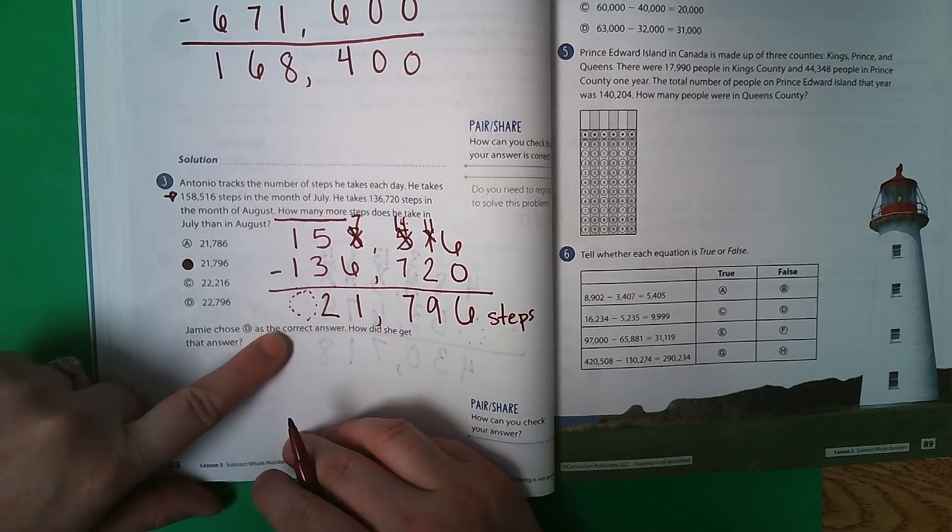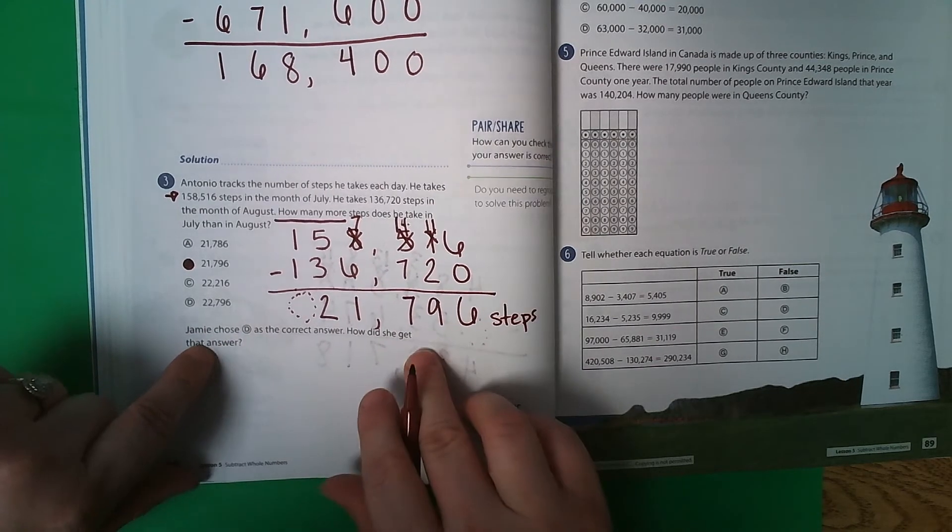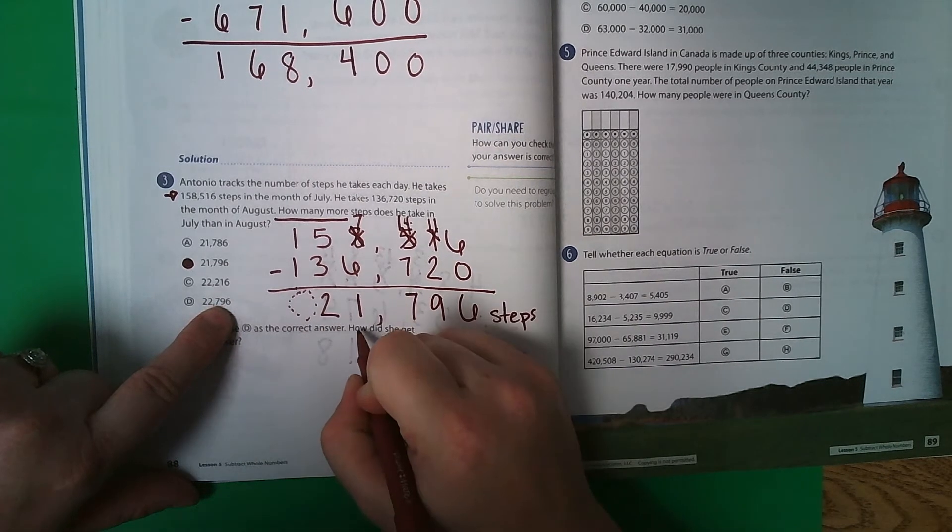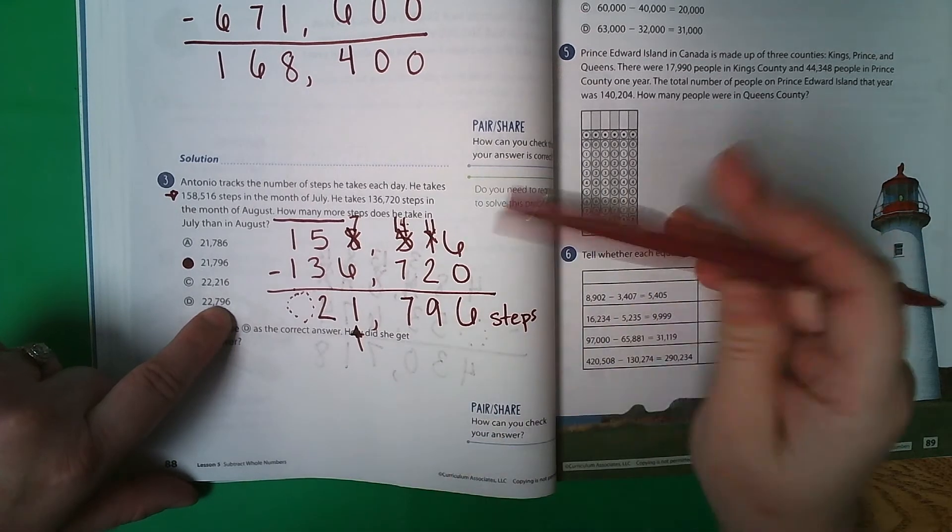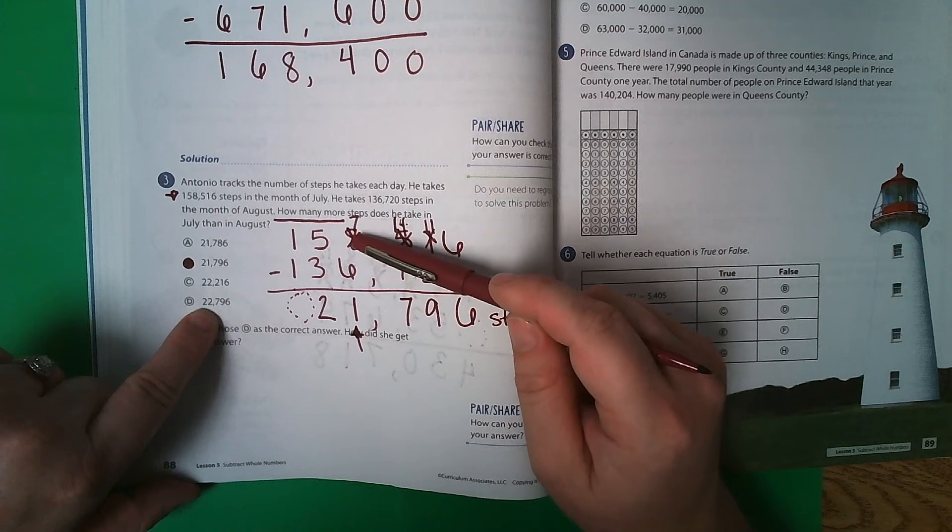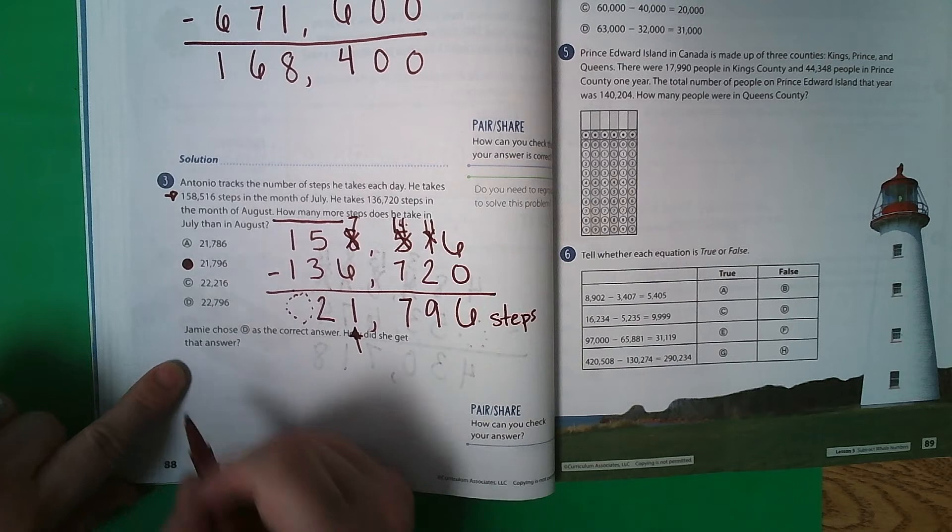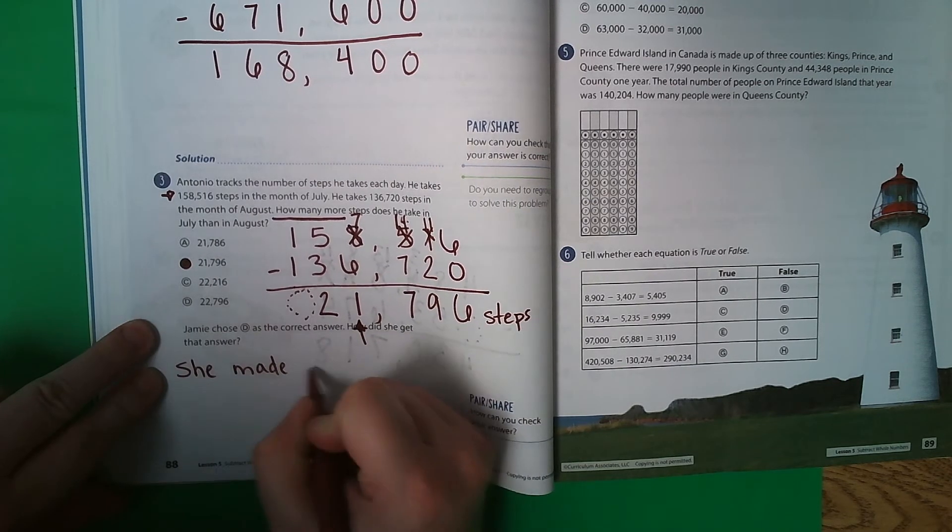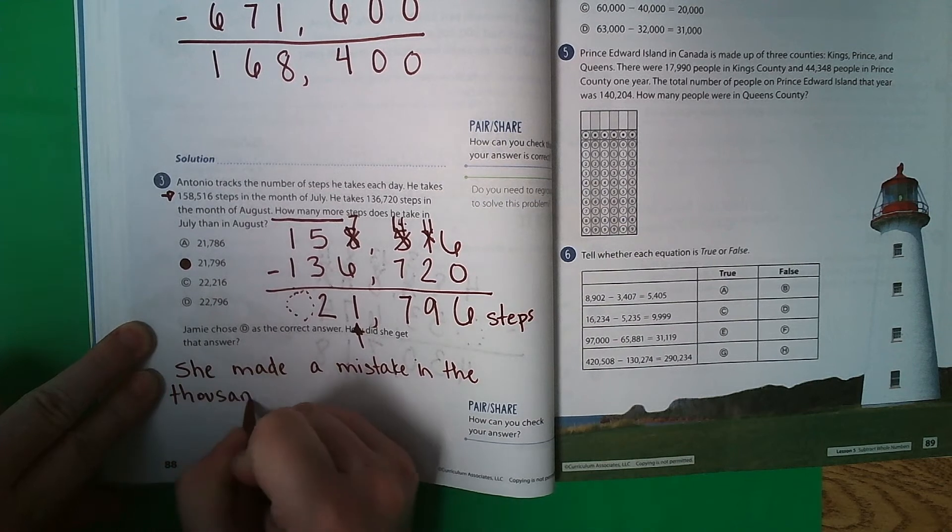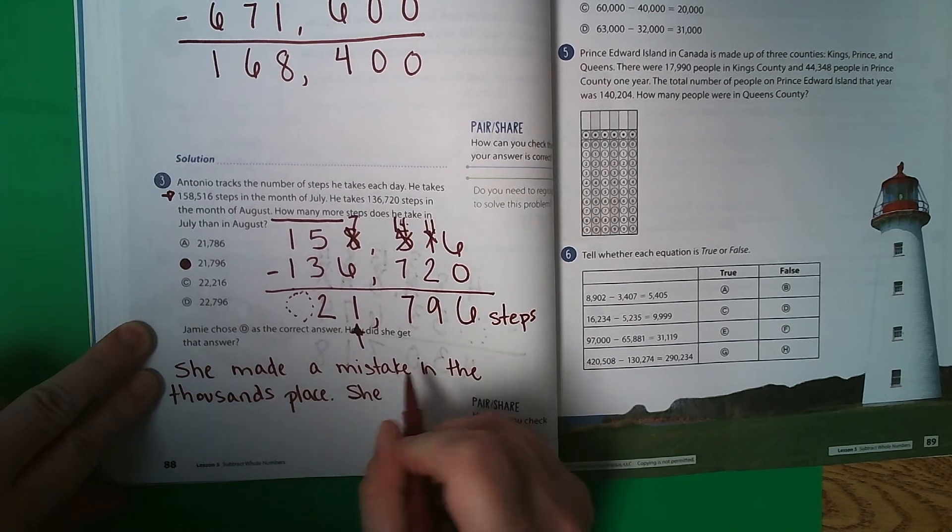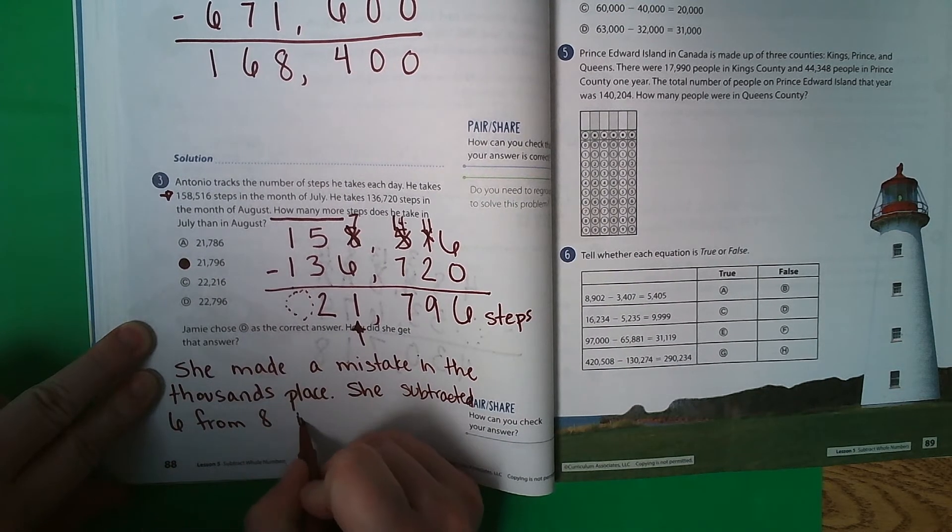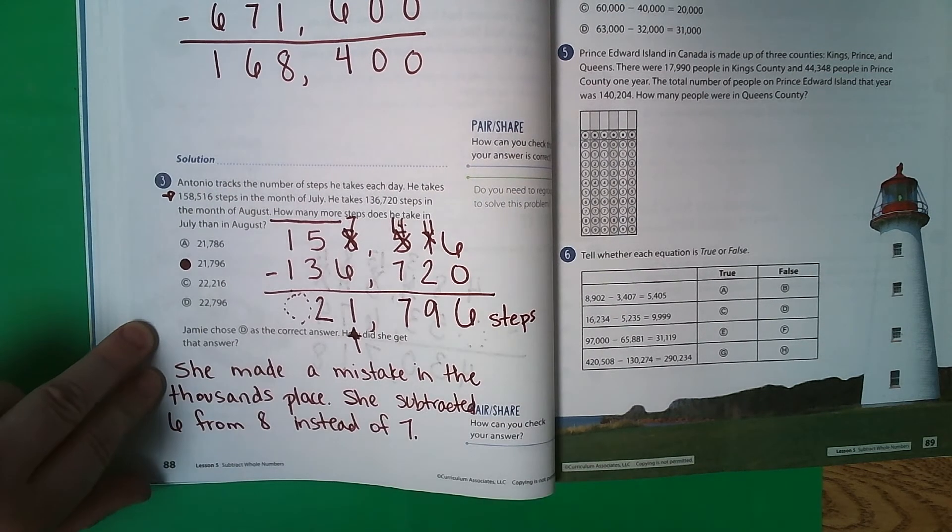Jamie chose D as the correct answer. How did she get that answer? Well, let's look here. D is 22,796. So this part is right. So it must mean if this is the number, she must have made a mistake in the thousands column. Well, 7 minus 6 is 1, but look, this is an 8. 8 minus 6 would be a 2. So she must have forgot to subtract from 7. She must have subtracted from 8. She subtracted 6 from 8 instead of 7.